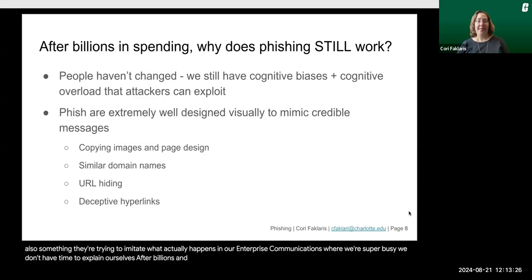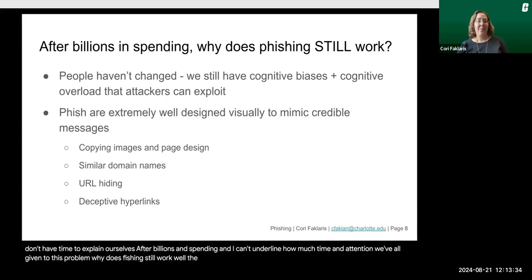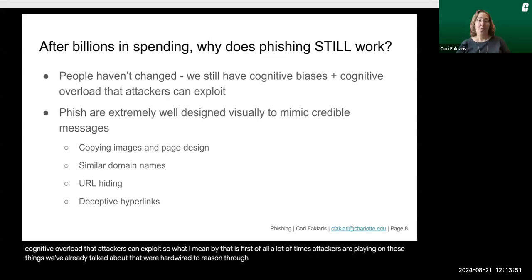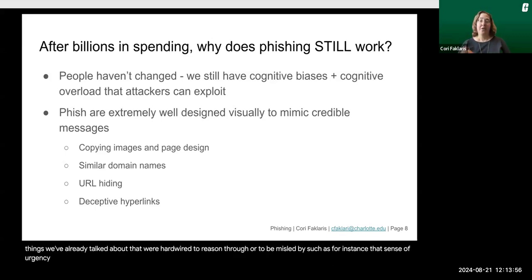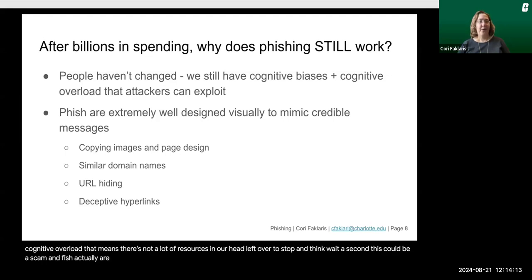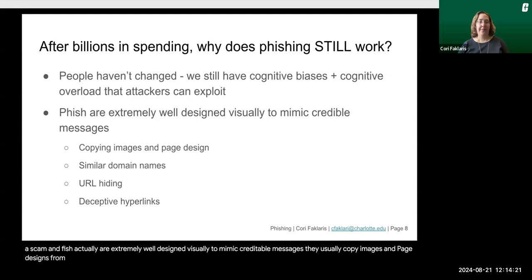After billions in spending and enormous attention given to this problem, why does phishing still work? The thing is, people haven't changed. We still have cognitive biases and cognitive overload that attackers can exploit. Attackers are playing on things we're hardwired to be misled by — such as a sense of urgency that overwhelms our reasoning. When we're multitasking, that cognitive overload means there aren't enough mental resources left to stop and think, 'wait, this could be a scam.' Phishing emails are also extremely well designed visually to mimic credible messages — copying images and page designs from the real thing and using similar domain names so that unless we're reading very carefully, we can't figure it out.